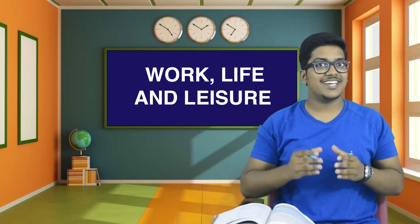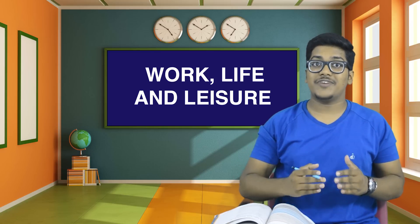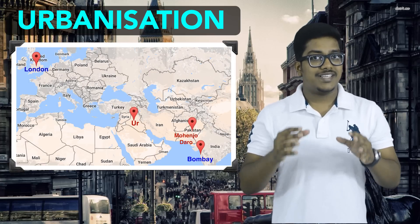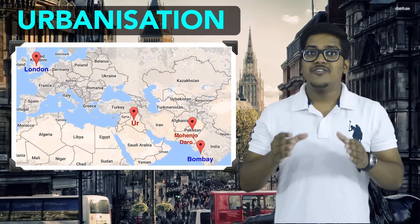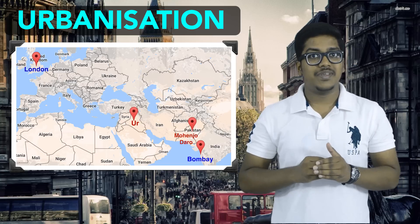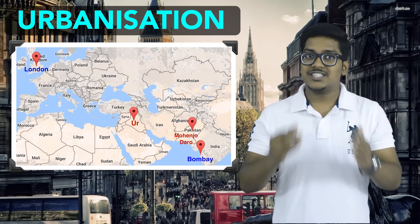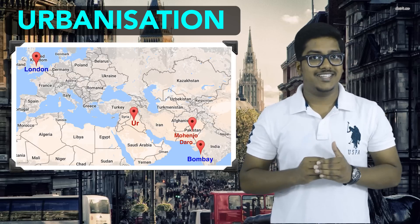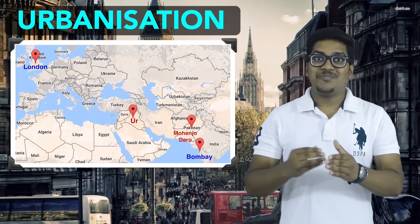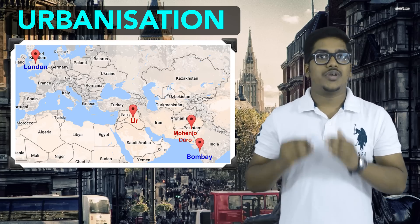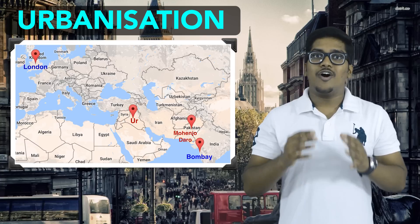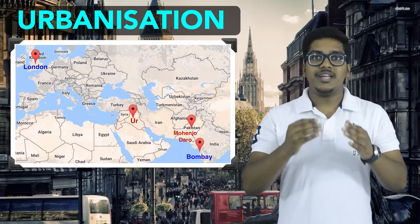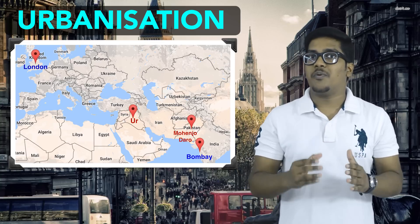Can you give us some examples of areas where urbanization's effects were first seen? Of course — Mohenjo-daro and Ur are two areas where urbanization's effects were among the earliest. In this chapter, we will understand the whole process of urbanization using London and Bombay as examples. We chose London because it is one of the world's largest cities, and Bombay, which we call Mumbai, because it is a very important city in the Indian subcontinent.